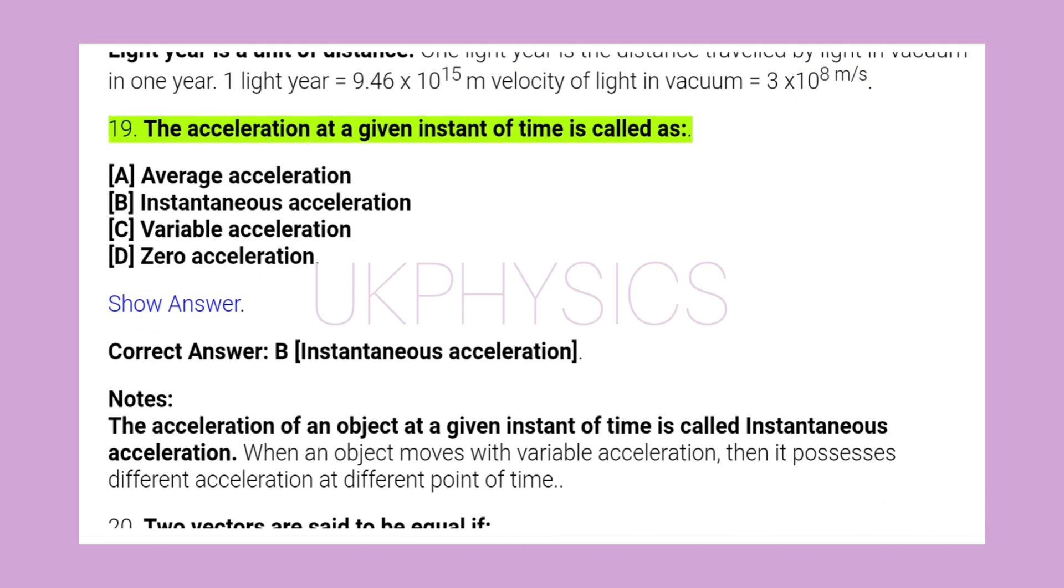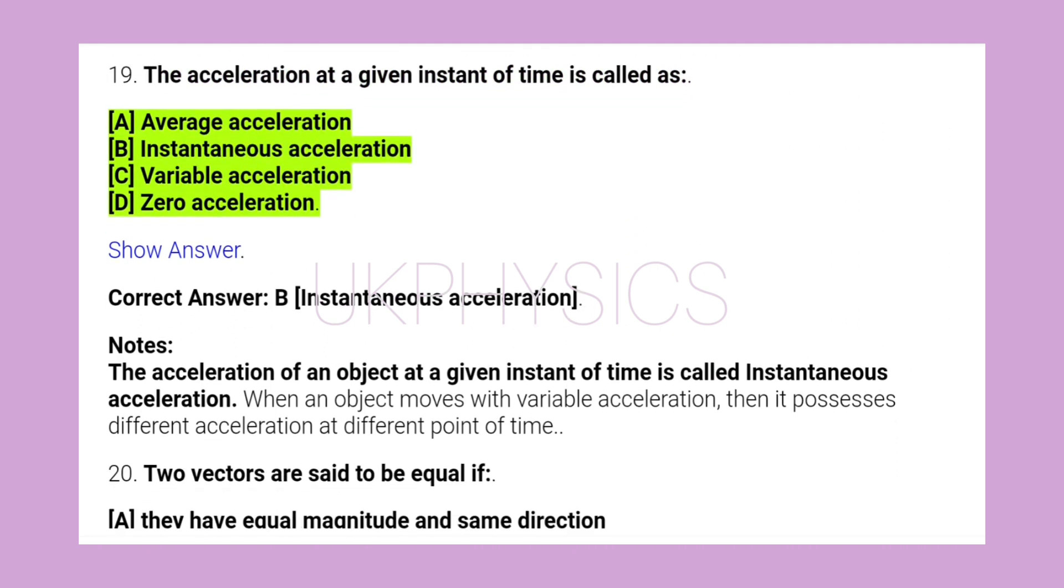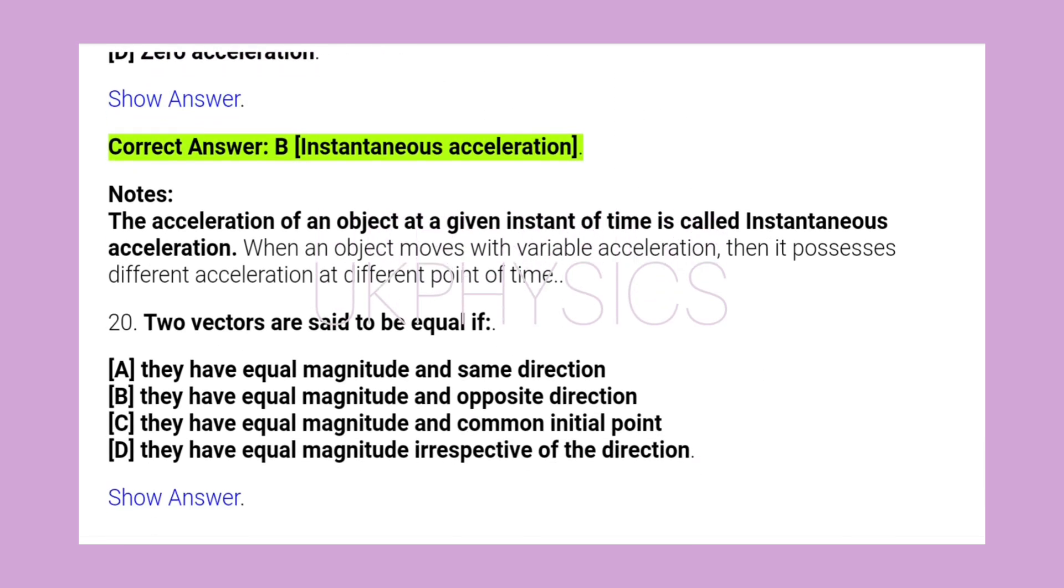19. The acceleration at a given instant of time is called as A. Average acceleration, B. Instantaneous acceleration, C. Variable acceleration, D. Zero acceleration. Correct answer B. Instantaneous acceleration.